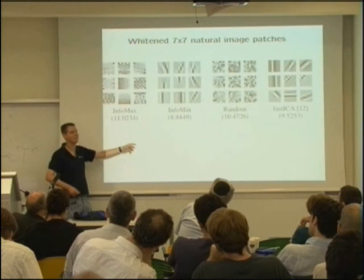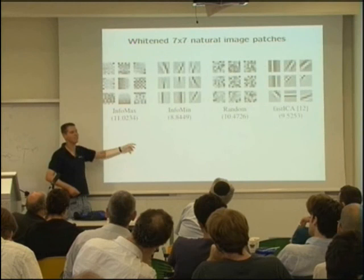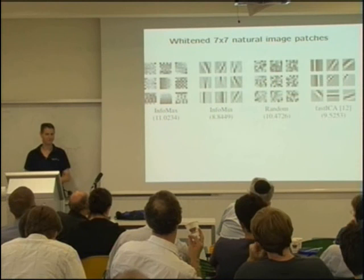For white data, undercomplete random projections are the most informative, while undercomplete ICA projections are the least informative. Thank you.